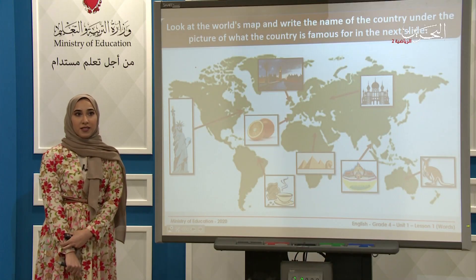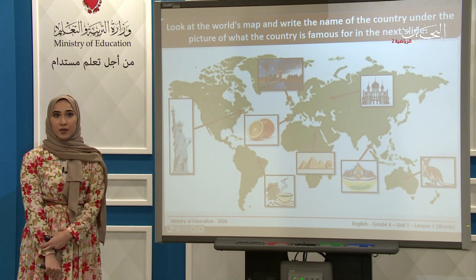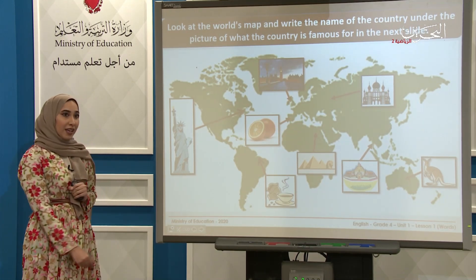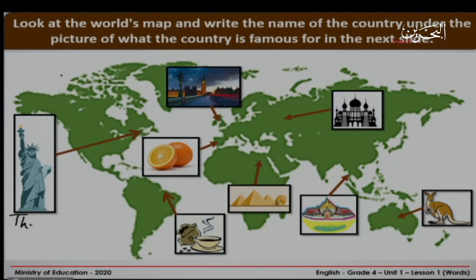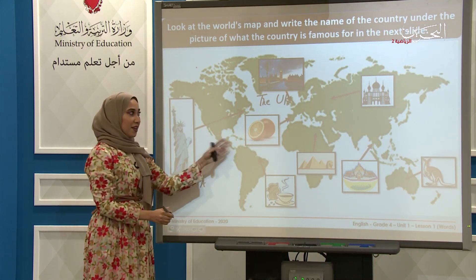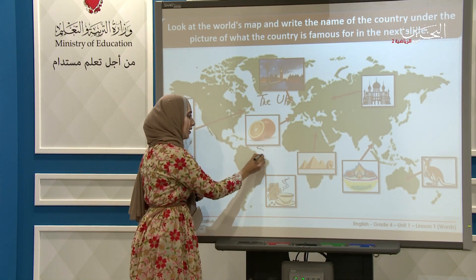Look at the world map and write the name of the country under the picture of what the country is famous for in the next slide. We have the Statue of Liberty — it's in the USA. Now let's look here: we have Big Ben, it's in the UK. Here we have the oranges; they are famous in Spain.